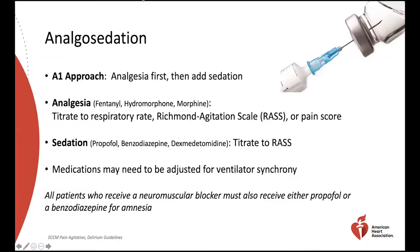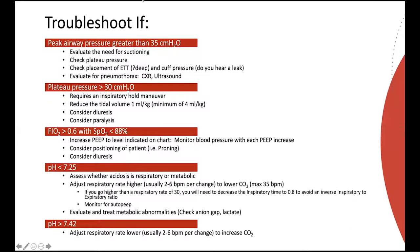Mechanical ventilation of the COVID-19 patient may be challenging. If peak airway pressures are greater than 35 centimeters of water, evaluate the need for suctioning, check the patient's plateau pressure, check placement of the endotracheal tube and cuff pressure, and evaluate for pneumothorax by chest X-ray or ultrasound. If the plateau pressure is greater than 30 centimeters of water, reduce the tidal volume by 1 milliliter per kilogram. Tidal volumes should rarely be less than 4 milliliters per kilogram.